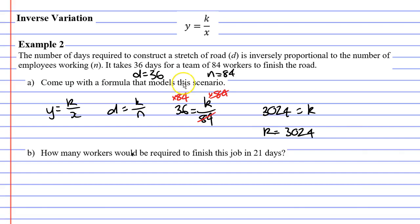Now, all we need to do is take our formula D equals k over N, and replace the k with 3,024. So D equals 3,024 over N. This is the formula for our scenario above.